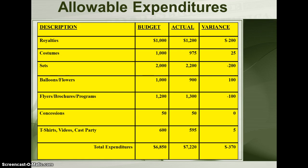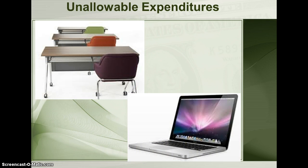Allowable expenditures for a drama club may include such items as royalties, costumes, and set materials. Unallowable expenditures may include equipment and/or furniture.